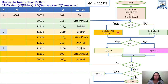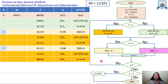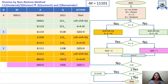We check A again: the MSB is now 0, meaning A is greater than or equal to 0. Following the flowchart, we place 1 at position Q0. Then N is decremented: N = 2 − 1 = 1. Since N is not yet zero, we loop back.